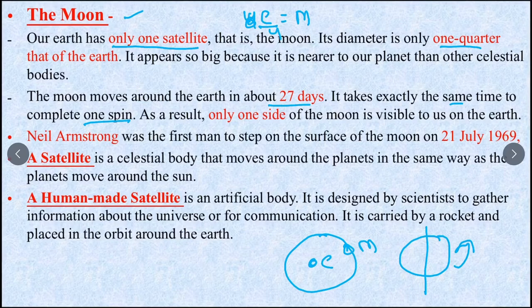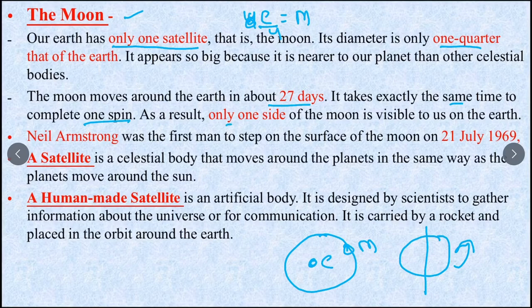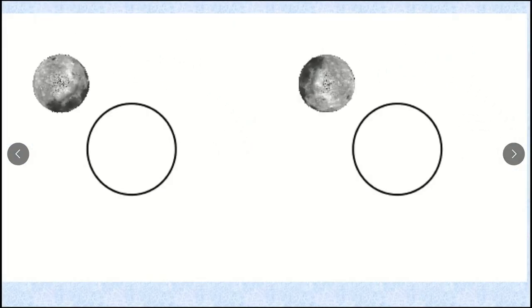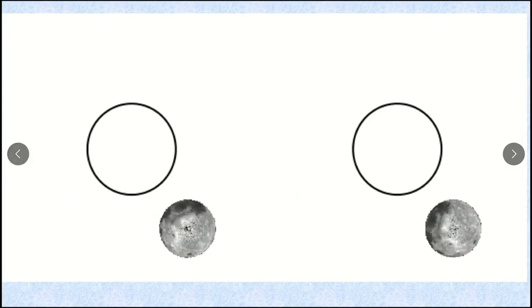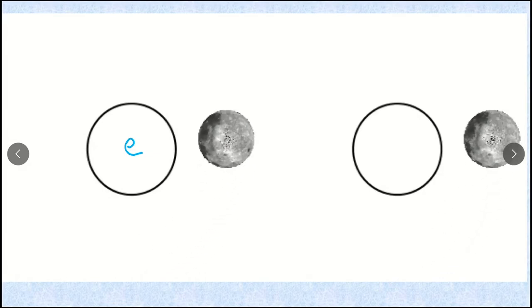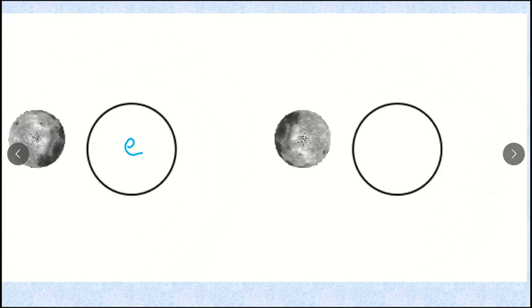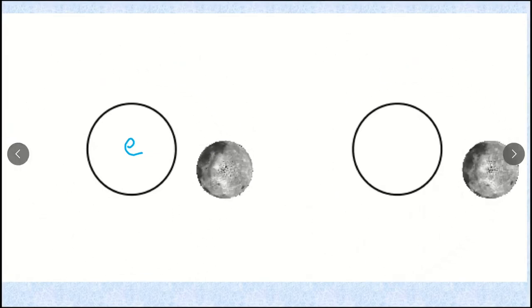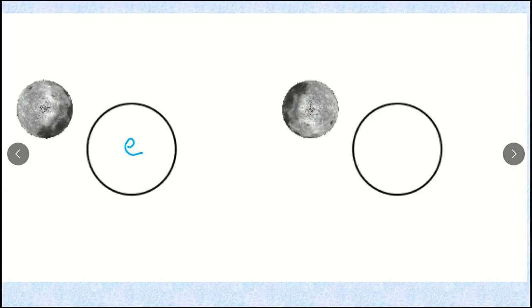The moon takes 27 days to revolve and the same time to rotate on its axis. What does it mean? It shows only one side to the Earth. See in this illustration, the moon is rotating on its axis and revolving around Earth. This means one side is always facing away. That's why we only see one face of the moon.